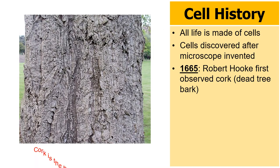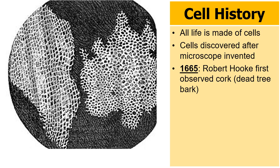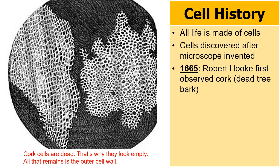What Robert Hooke did was he examined cork, which is really just the bark of this type of oak tree right here. If we zoom in, this is Robert Hooke's hand-drawn image of cork from 1665. All those boxes, those little cubes that you see, those are the cork cells. Now these cells are dead — that's why they all look empty. You're not going to see any nucleus or mitochondria or any other parts of the cell. With these cork cells, the only thing you're able to see is the outer cell wall.